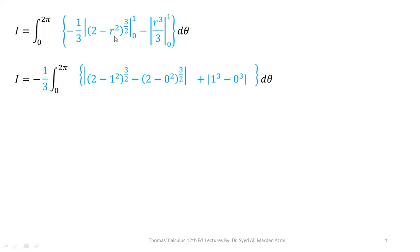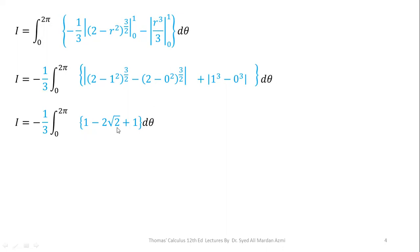Applying the fundamental theorem of calculus — upper limit minus lower limit — on each term: for the first term, replacing R with 1 gives (2 minus 1)^(3/2) = 1, and replacing R with 0 gives 2^(3/2) = 2 root 2. For the second term, 1 cubed minus 0 equals 1. This whole term is constant with respect to theta, so we take it outside. We get 1 plus 1 equals 2, giving (2 minus root 2) divided by 3, with the limit from 0 to 2 pi of d theta. Integration with respect to R is now complete.